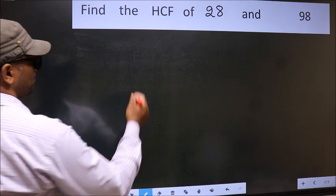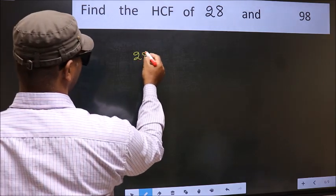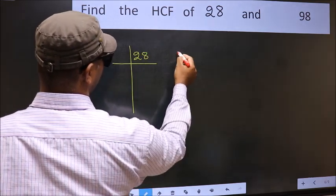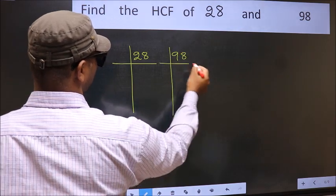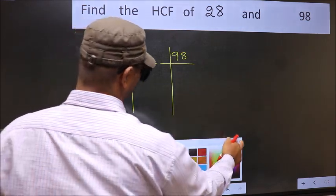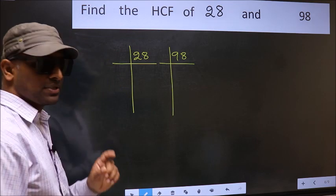What I mean is 28 and 98. This is your step 1.